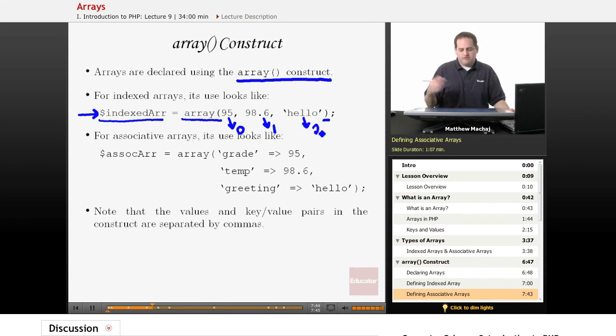Now to define associative arrays, we use a similar syntax. We have the variable name. We have the array construct with the parentheses. And we have, again, a comma delimited list of values, but instead of just values, they're actually key-value pairs. So we have the same data, 95, 98.6, and hello, the same values.